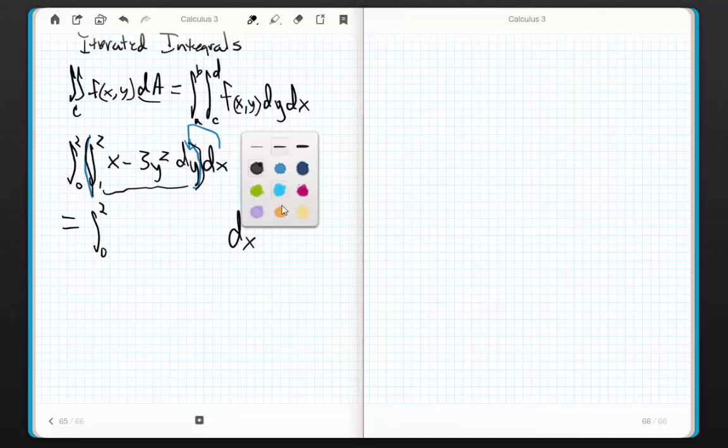Now, what's going on inside? Well, again, I'm taking the integral from 1 to 2 of x minus 3y². So what does this become? Well, it becomes xy minus y³. And then what do I do from 1 to 2?